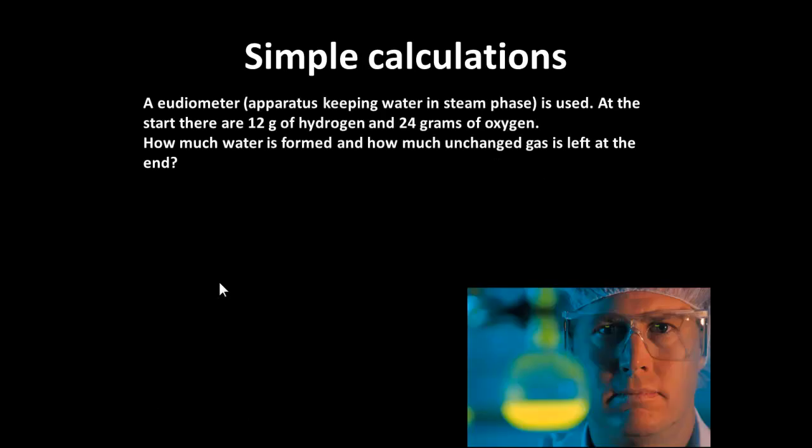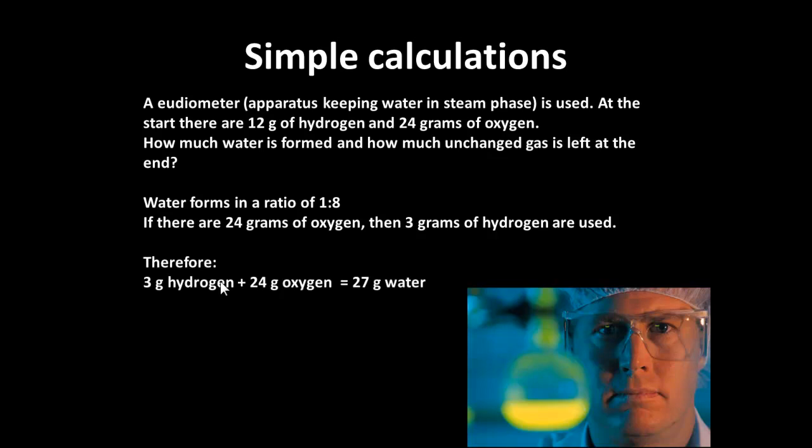Here's a simple calculation. If you have something called a eudiometer, which keeps water in the steam phase, at the start you get 12 grams of hydrogen and 24 grams of oxygen. How much water would be formed, and how much unchanged gas would you get? We know that water forms in a ratio of one to eight. We've got 24 grams of oxygen, and that would normally require three grams of hydrogen. So three grams of hydrogen plus 24 grams of oxygen would give 27 grams of water. The hydrogen wasn't fully used, so take away the three grams that are used, and you're left with nine grams of hydrogen.